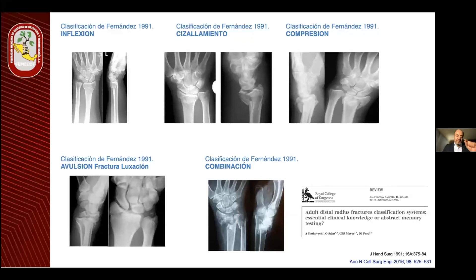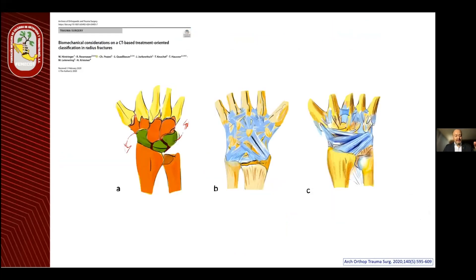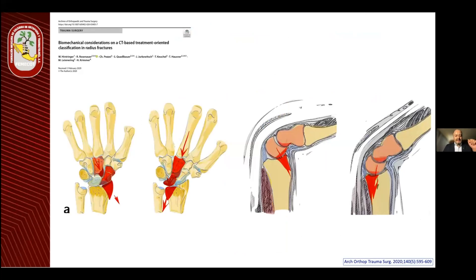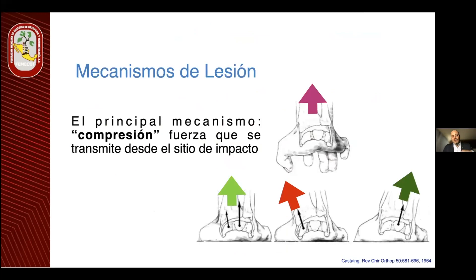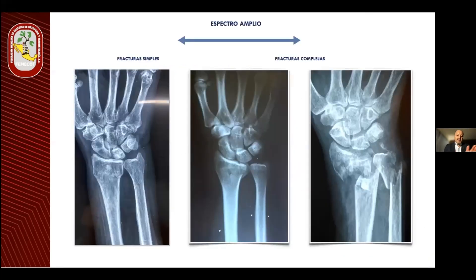Pero, ¿qué hay más allá de las lesiones óseas? Pues lesiones de partes blandas, que a veces se nos olvida en el tratamiento. Existen clasificaciones biomecánicas de acuerdo al mecanismo de lesión, a la forma de impactar en el piso, que nos orientarán a saber cómo fue la absorción de cargas y hacia dónde fue dirigida. Si es una fractura con impacto central, si es más radial hacia la estiloides del radio, o más hacia cubital, la fosa del semilunar y la zona del cúbito.